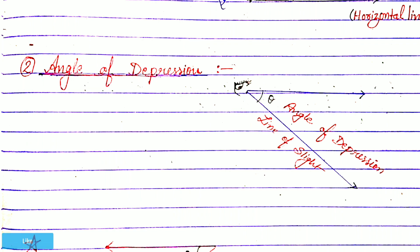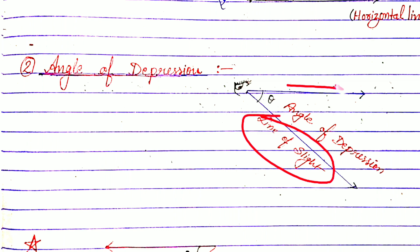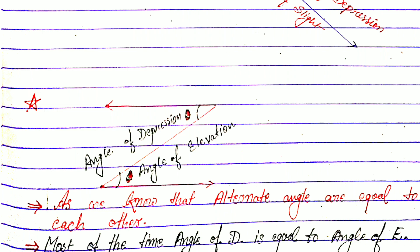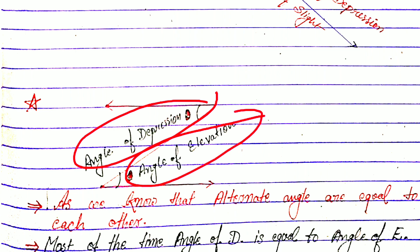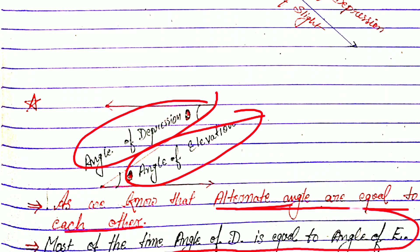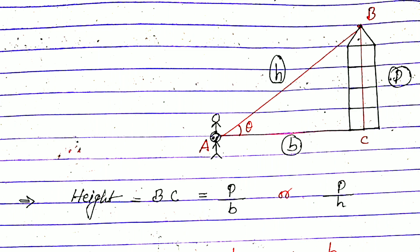One important thing — the angle will occur between the line of sight and the horizontal line. Also, there is a relation between angle of depression and angle of elevation: they are related through alternate angles. As we know, alternate angles are equal to each other, so most of the time angle of depression is equal to angle of elevation.